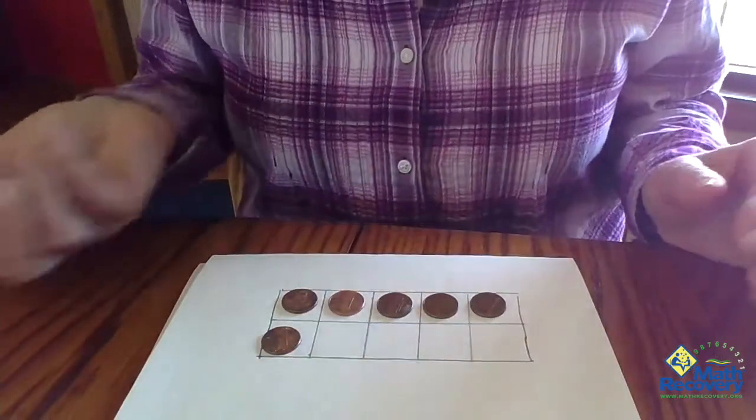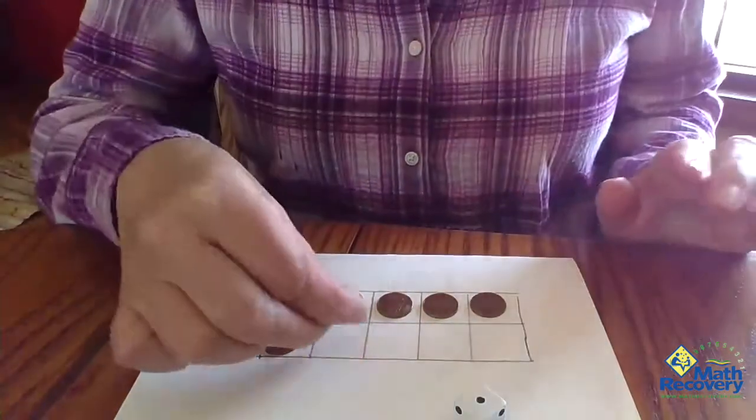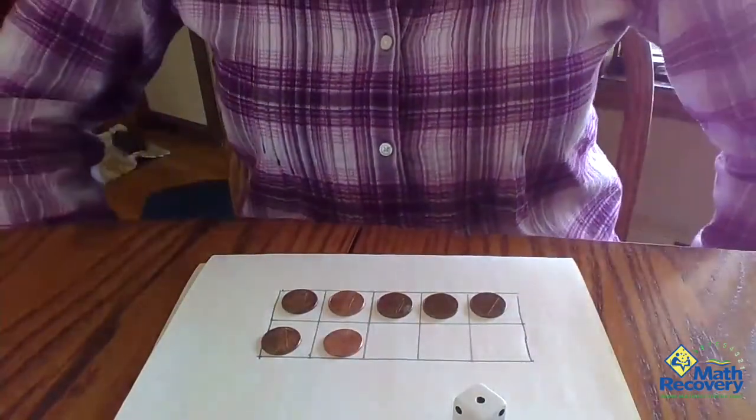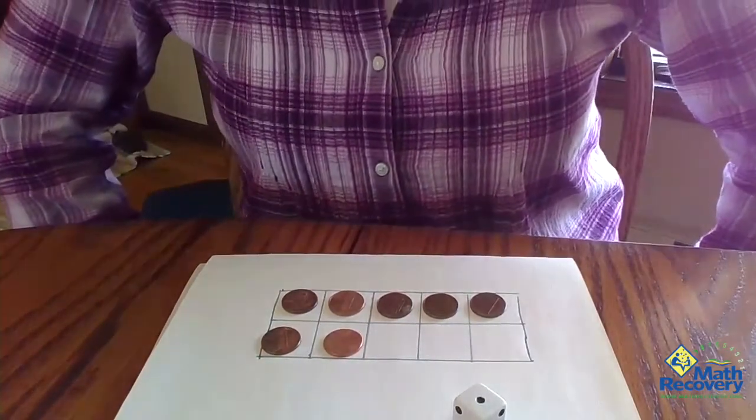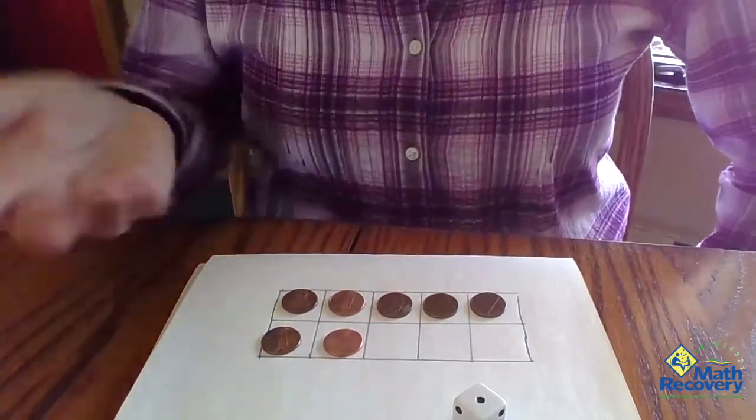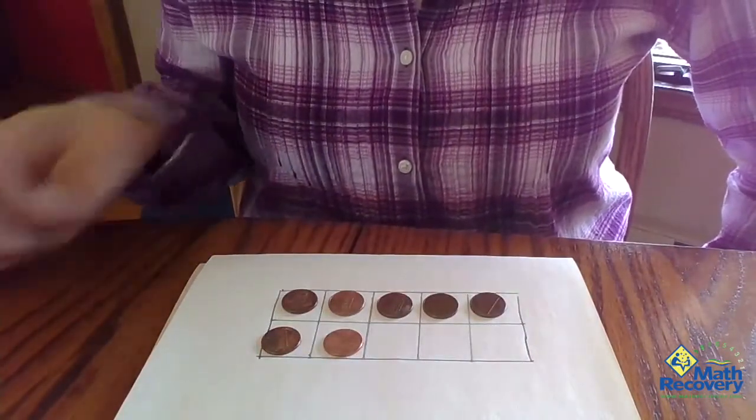The other person rolls, got a one. So I put one in and now I would say, I have seven in my tens frame. I need three more to make ten. Now you have to roll a number three or less to win this game.